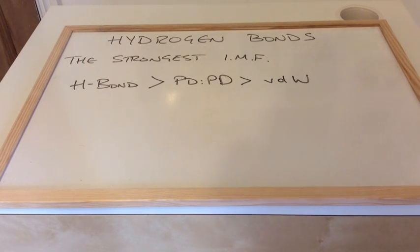You can see the order of strength there. Hydrogen bonds are stronger than permanent dipole-permanent dipole, which are in turn stronger than van der Waals.